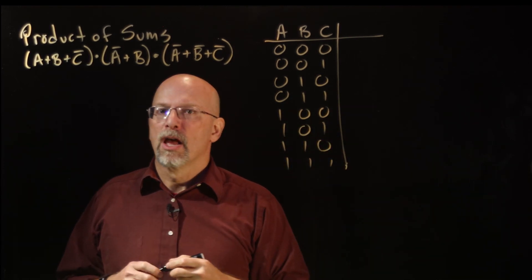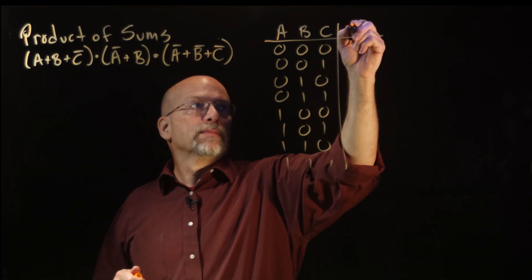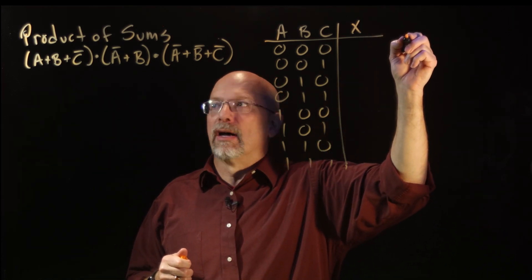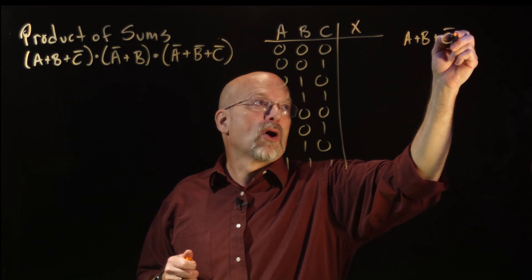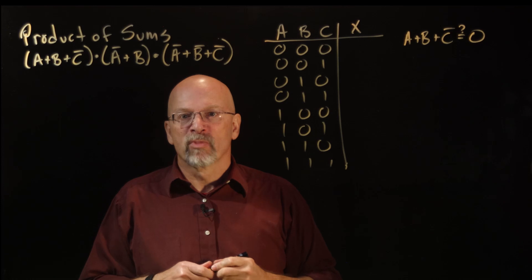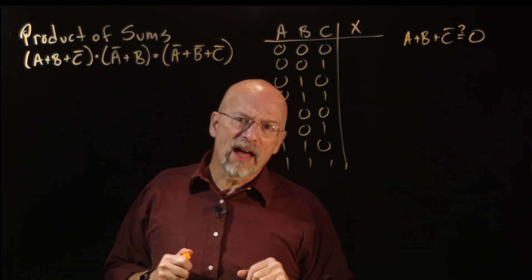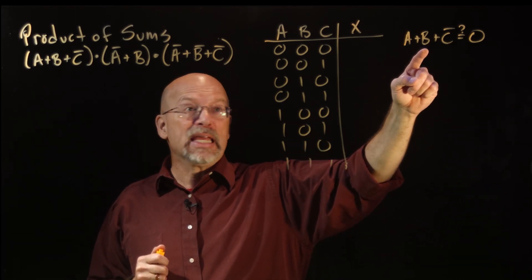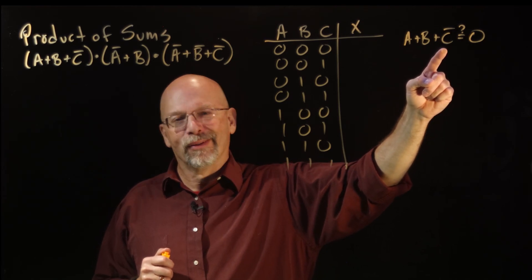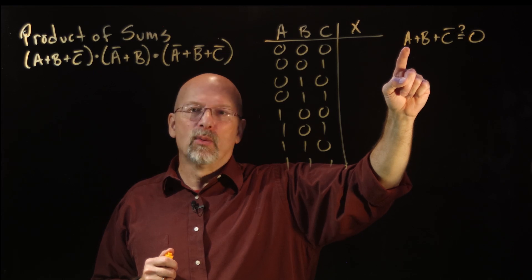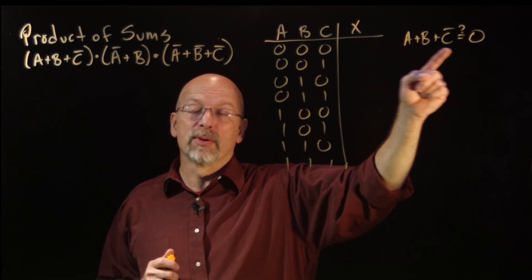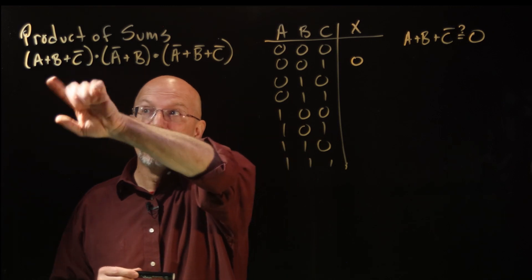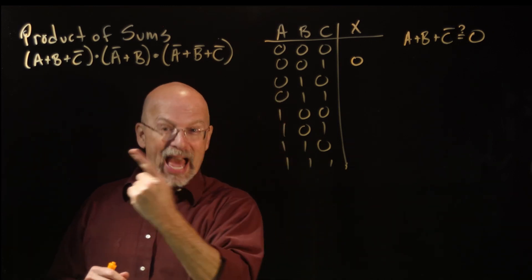Now, what does that look like for expression X? We have A or B or C̄ — when is this equal to zero? Well, for a sum, the only way we get a zero output is zero or zero or zero. That means A has to be zero, B has to be zero, and C has to not be zero — the only other option is a one. So when is A zero, B zero, and C one? That row right there. So this OR gate with all three inputs generates exactly one zero on the output.